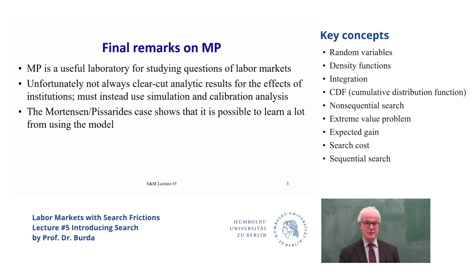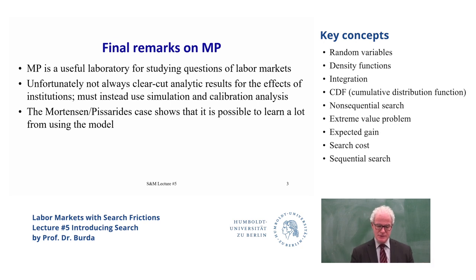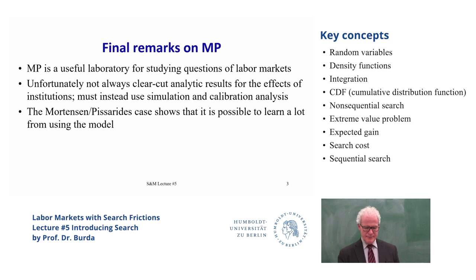We've learned from the Mortensen-Pissarides setup that you can learn a lot. We showed that in 1999 — the famous handbook chapter of Mortensen-Pissarides — that if you were to give the U.S. the labor market institutions of Europe, it would lead to a higher rate of unemployment and a lower rate of job destruction. Similarly, if the Europeans adopted American institutions, unemployment would be lower.